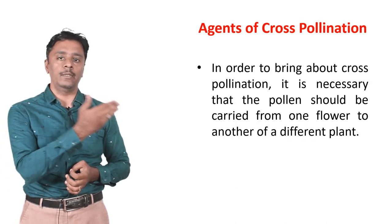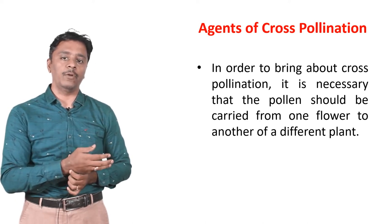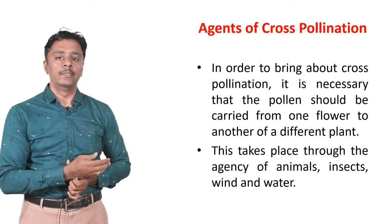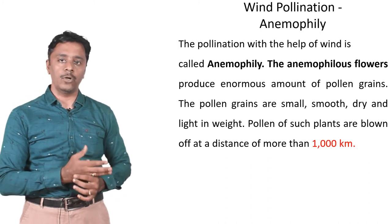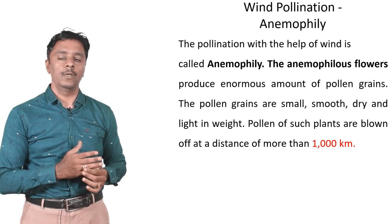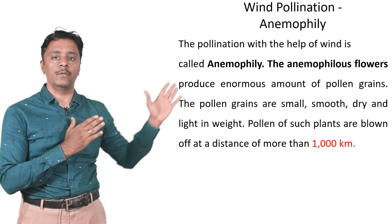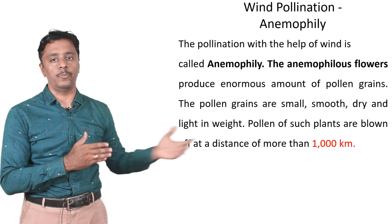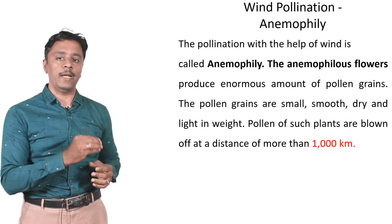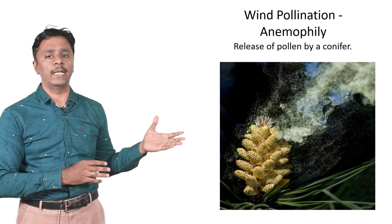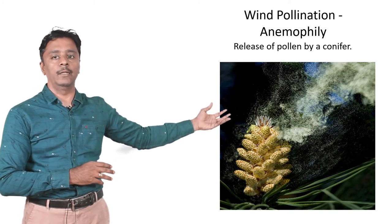What are the agents of cross-pollination? In order to bring about cross-pollination, it is necessary that the pollen be carried from one flower to another of a different plant through agents like animals, insects, wind and water. The first one is wind pollination, also called anemophily — pollination with the help of wind. Anemophilous flowers produce enormous amounts of pollen grains. The pollen grains are small, smooth, dry and light in weight. Pollen of such plants can be blown for distances of more than 1000 kilometers.